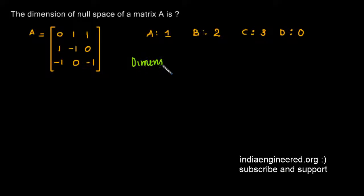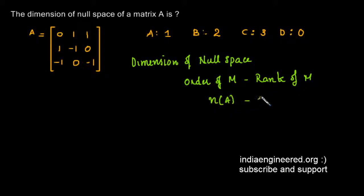Dimension of null space is nullity and is the difference between order of the matrix minus rank of the matrix, that is n(A) minus rank(A). So here n is 3.